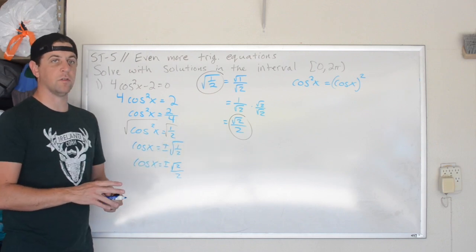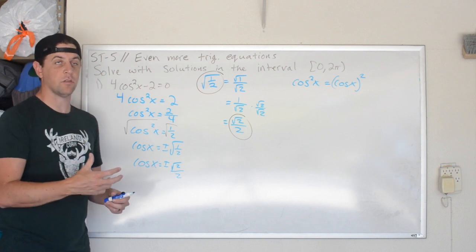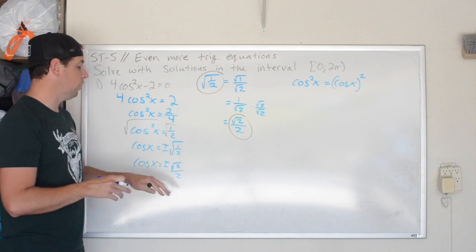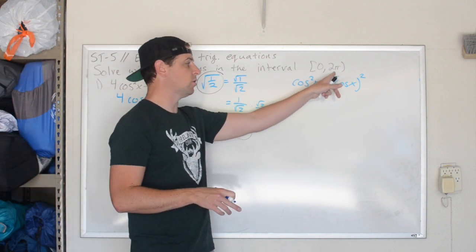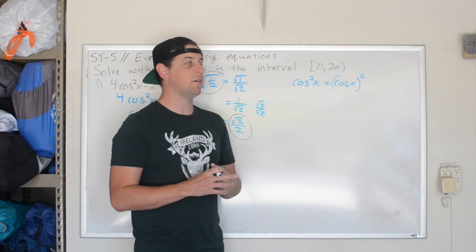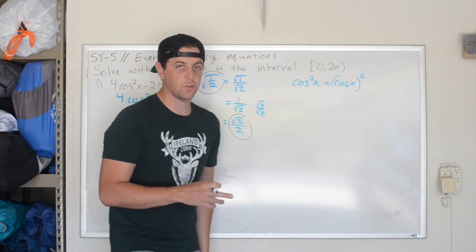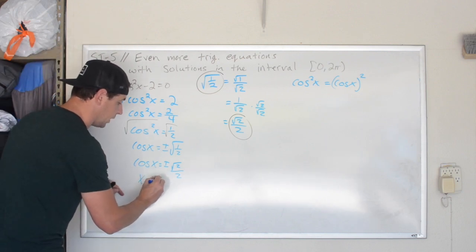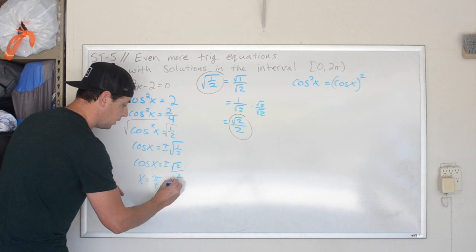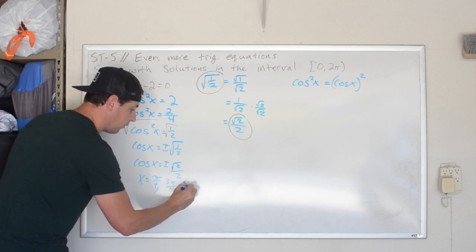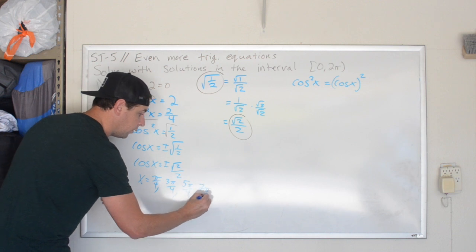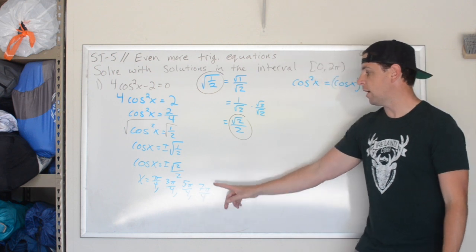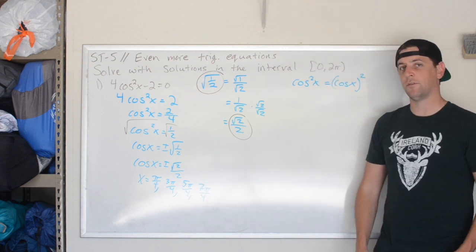So I want to know when cosine of x equals plus or minus radical 2 over 2 — that is, when the x value on the unit circle is either positive radical 2 over 2 or negative radical 2 over 2, with solutions only between 0 and 2 pi. That's true at all the pi over 4 values: pi over 4, 3 pi over 4, 5 pi over 4, and 7 pi over 4. Those are our four solutions.